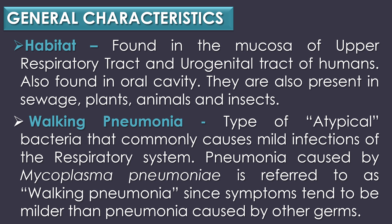Mycoplasma pneumoniae are found in the mucosa of the upper respiratory tract and urogenital tract of humans. It is also found in the oral cavity and is also present in sewage, plants, animals, and insects. Mycoplasma pneumoniae is a type of atypical bacteria that commonly causes mild infections of the respiratory system. Pneumonia caused by Mycoplasma pneumoniae is sometimes referred to as walking pneumonia, since symptoms tend to be milder than pneumonia caused by other germs or other bacterial isolates.